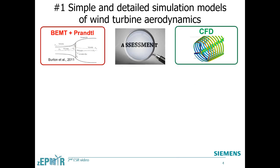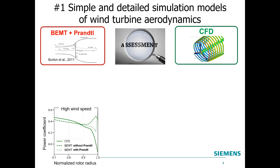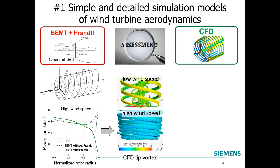We performed a study to compare predictions of BEMT plus the Prandtl model for the effect of the tip vortex with CFD, to understand the physical mechanisms responsible for the gaps of simple aerodynamic models. Our main conclusion is that the BEMT plus Prandtl predictions of power coefficient near the blade tip do not match the CFD ones at high wind speed. This is because BEMT assumes a shape for the tip vortex that is not the one predicted by CFD at high wind speed, while there is more agreement at low wind speed.